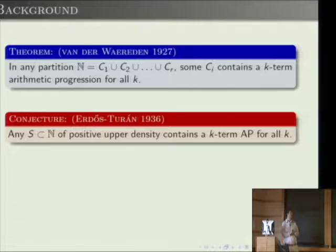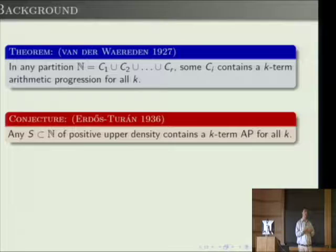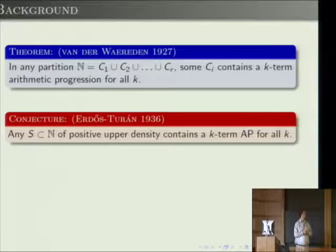Erdős and Turán in the mid-1930s thought that something stronger should hold: that if you have a subset of the positive integers of positive upper density, then it must contain a k-term arithmetic progression for all k. If you partition the positive integers into r classes, one of the classes will have density at least 1/r, so the biggest class will have to contain a k-term arithmetic progression.